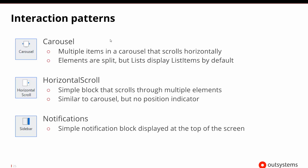There are also more sophisticated interaction patterns. The carousel lets you swipe horizontally through pictures, with dots at the bottom indicating which image you're viewing. The horizontal scroll is similar but without any indicator feedback. And there's a simple notification block that appears at the top of the screen.